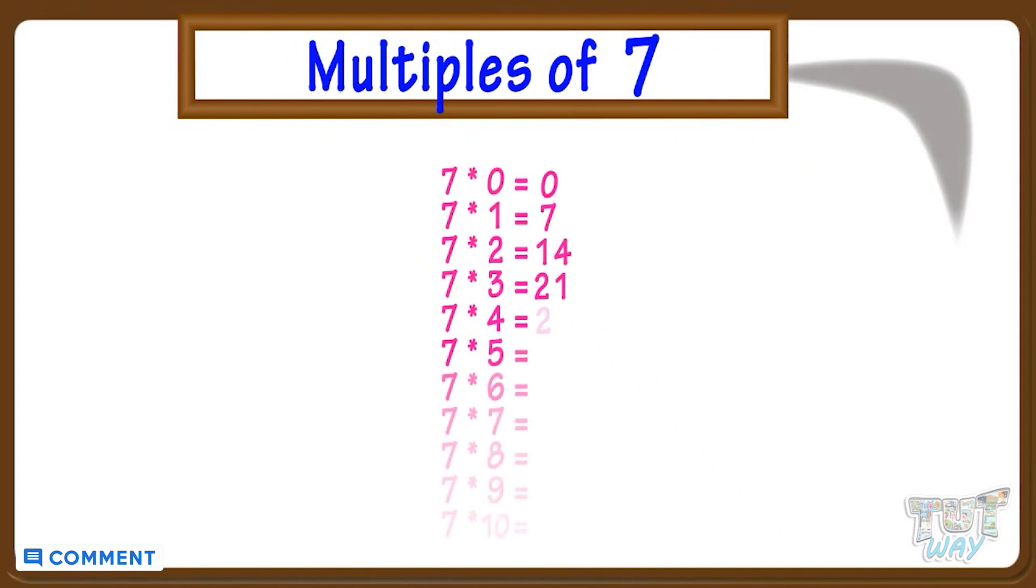Now, here we have another number, 7. Let's list its multiples. We now know multiples of a number are all numbers that come in its step counting or its multiplication table. So multiples of 7 are 0, 7, 14, 21, 35, 42, 49, 56, 63, 70 and so on.